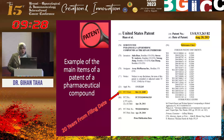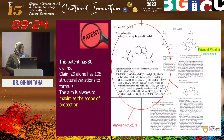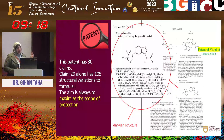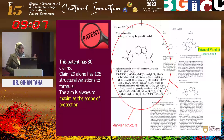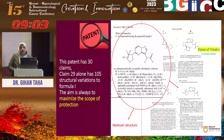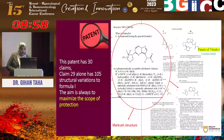This one was submitted by PCT, which I'll explain now. Here, my talk about claims — for example, this same patent has 30 claims. One of them, Claim 29 alone, has 105 structural variations to the formula. So these inventors covered a very perfect, excellent scope of protection, preventing any other inventor from making use of their work and blocking the way for them.